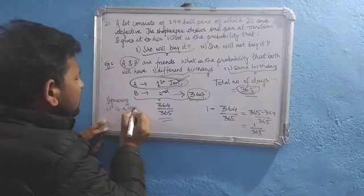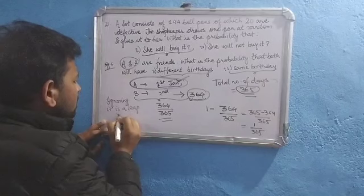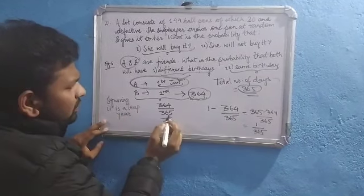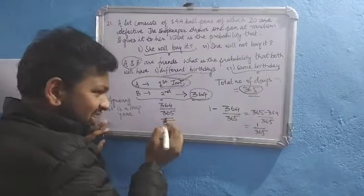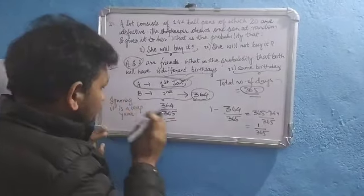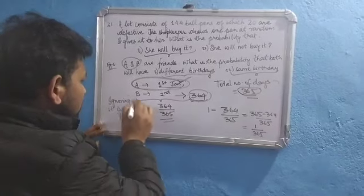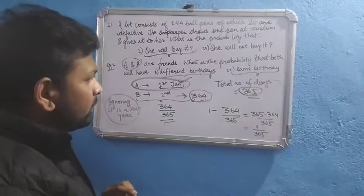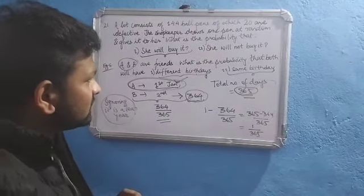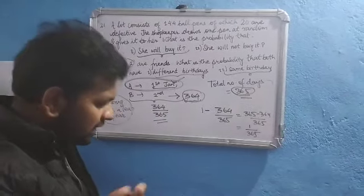Whether it is a leap year will be given in the question. If it is a leap year, the number of possible outcomes will be 366 instead of 365.